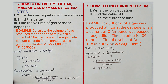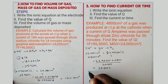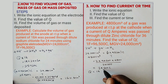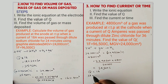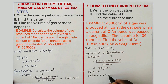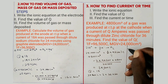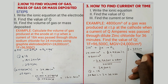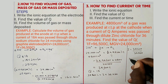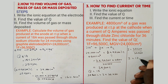Step three is to find the current. We say Q = IT. The value of Q is 38,600 C, and the time taken was 36 minutes. So 38,600 = I × 36 × 60. Therefore I = 38,600 ÷ (36 × 60), which gives I = 17.87 amperes. So let's end the lesson.